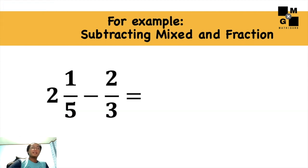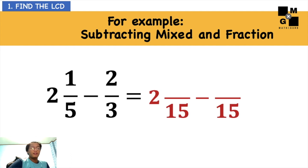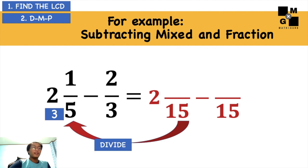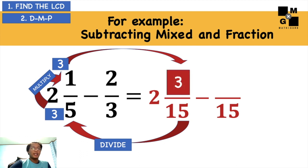Next, let's subtract mixed and a fraction. I have here 2 and 1/5 minus 2/3. So I'll find the LCD. LCD is 15. Just like what I said before, don't mind yet the whole number. And then you may apply now the DMP technique. 15 divided by 5 is 3. 3 times 1 is 3, and then put 3 there. So you will have 2 and 3/15.